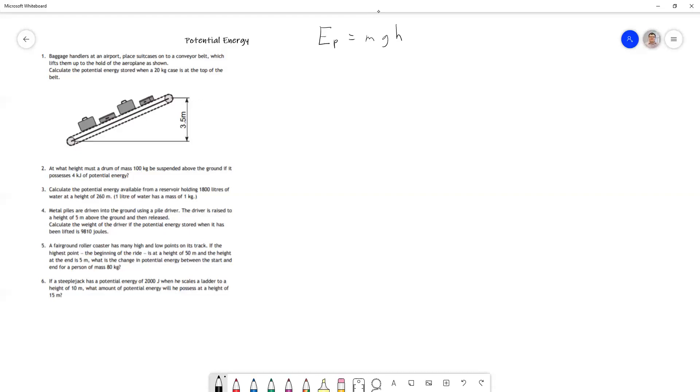Question one: Baggage handlers at an airport use a conveyor belt which lifts suitcases up to the hold of the airplane. Calculate the potential energy when a 20 kilogram suitcase is at the top of the belt. Potential energy is all about where something is, not how it got there. We're not interested in the journey, we're interested in where the case is when it's at the top. The mass equals 20 kilograms and the height is 3.5 meters.